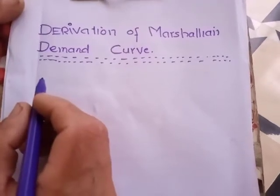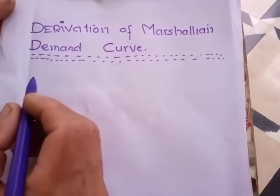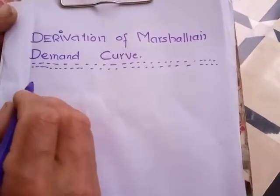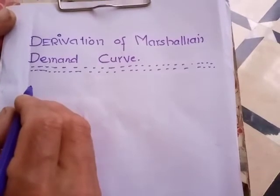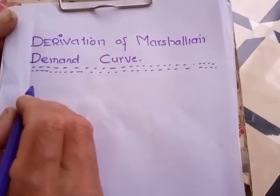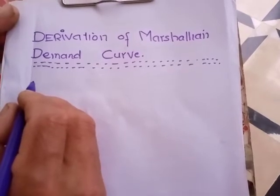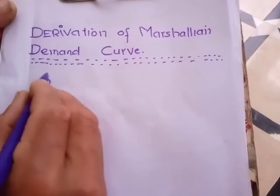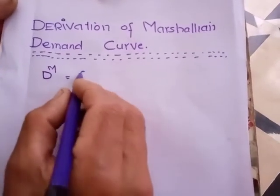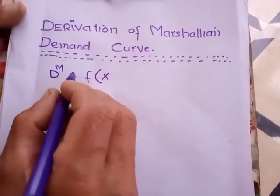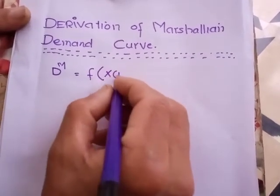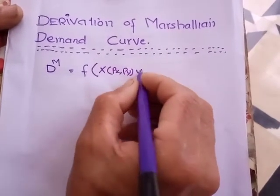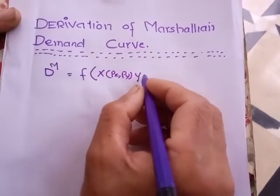Today we derive the Marshallian demand curve. The Marshallian demand curve is a function of prices and income, where income is assumed to be constant. So demand for Marshallian is a function of x, where x is the function of price of x and price of y.